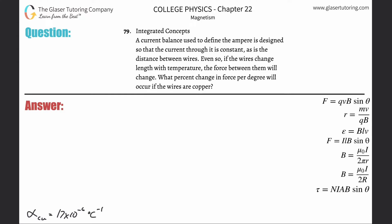Number 79, integrated concepts. A current balance used to define the ampere is designed so that the current running through it is constant, as is the distance between the wires. Even so, if the wires change length with temperature, the force between them will change. What percent change in force per degree will occur if the wires are copper?